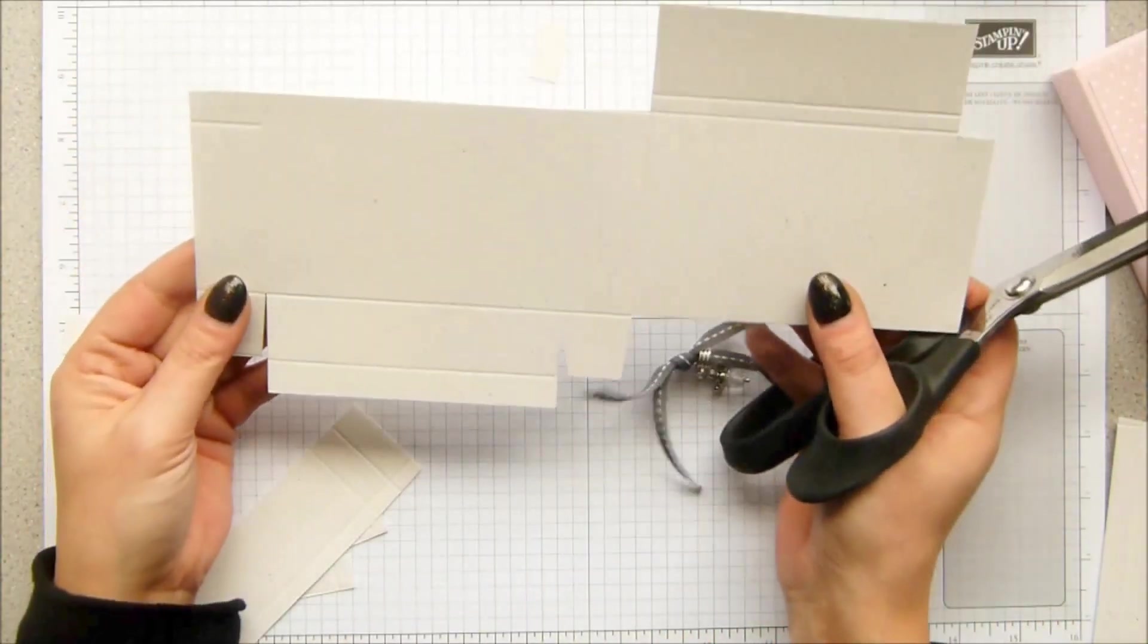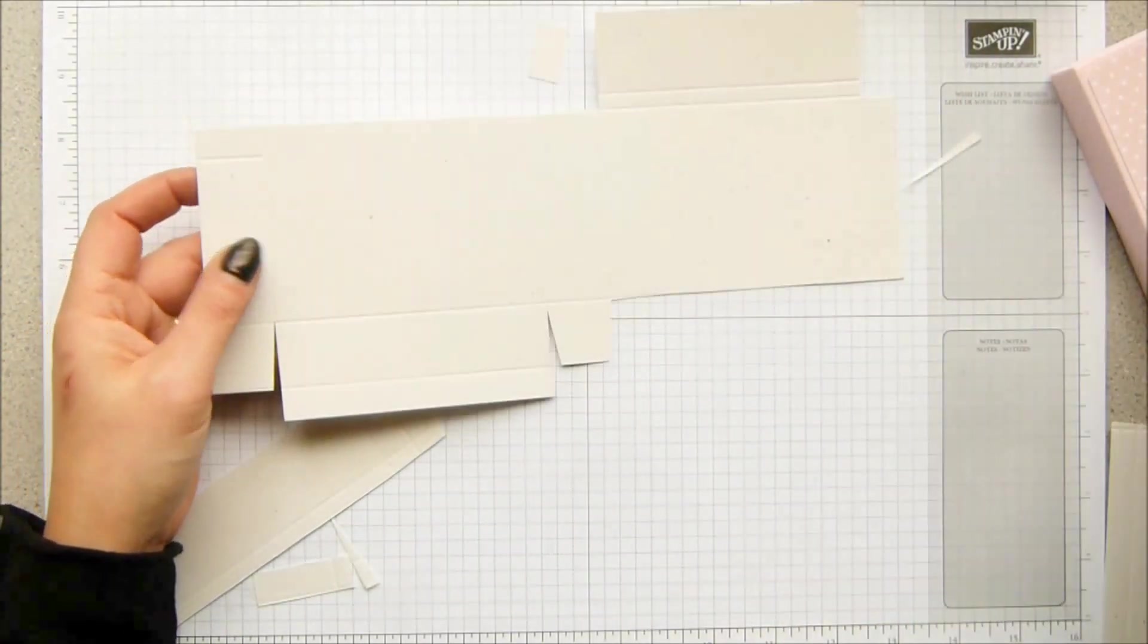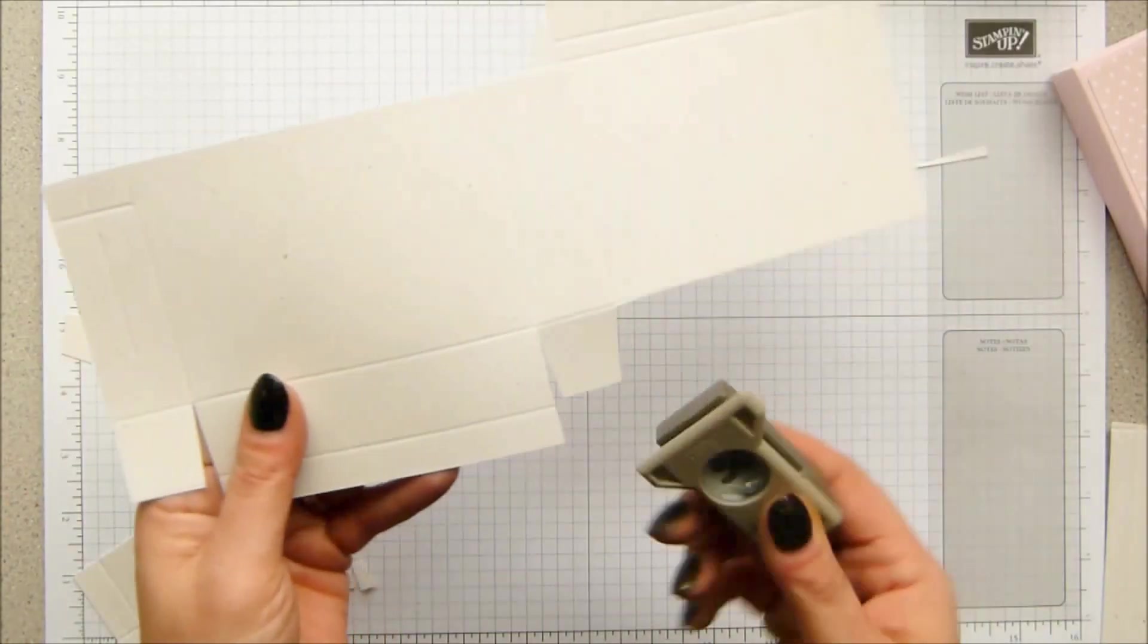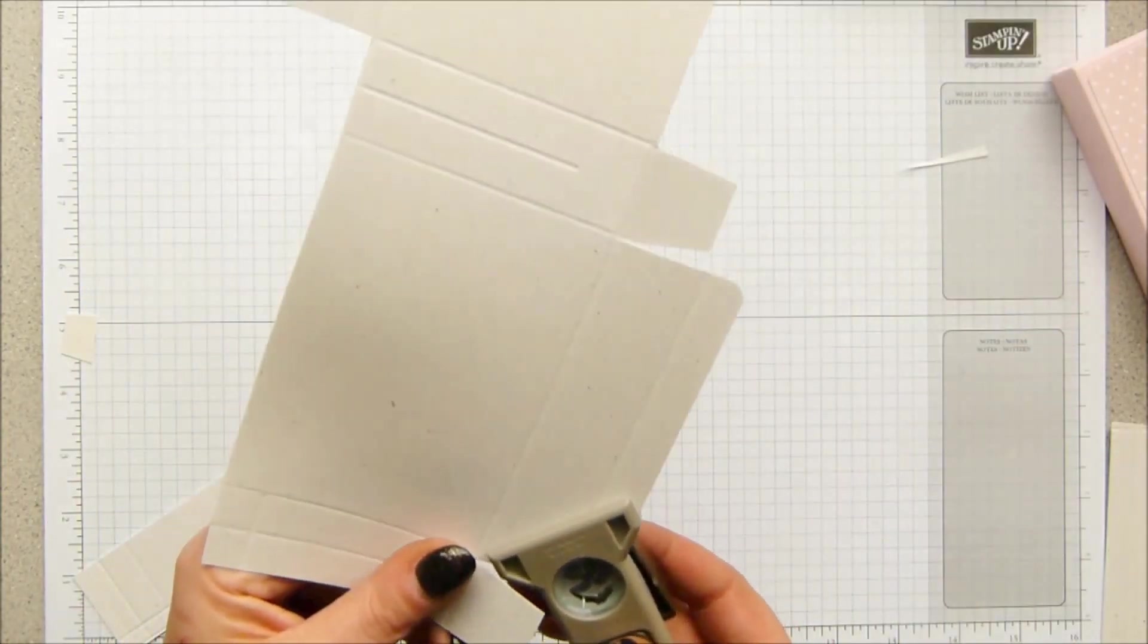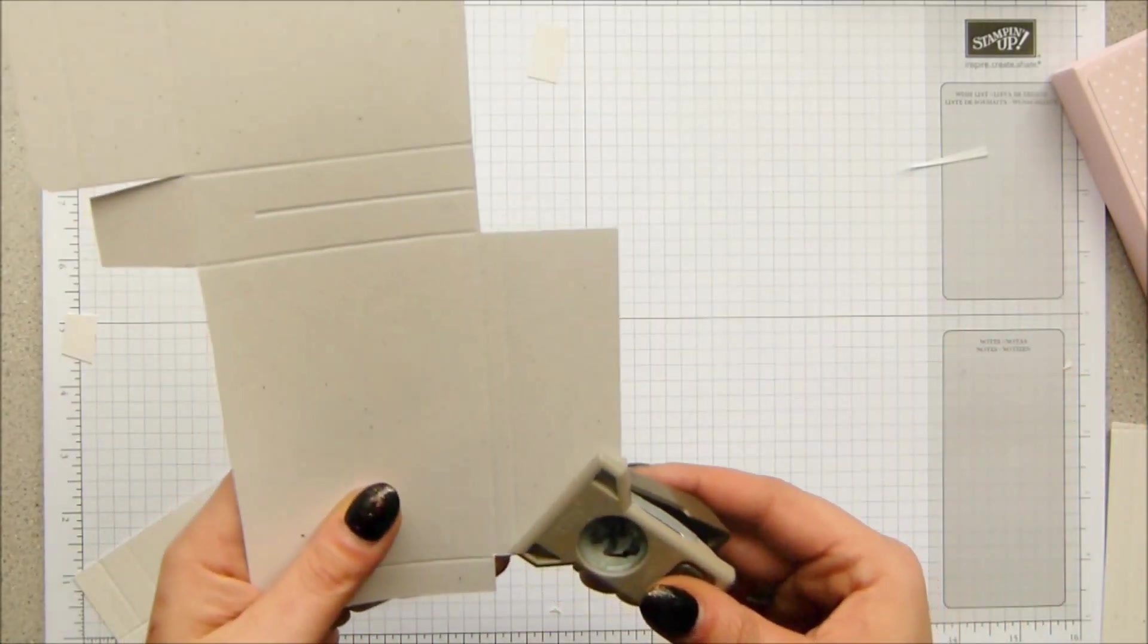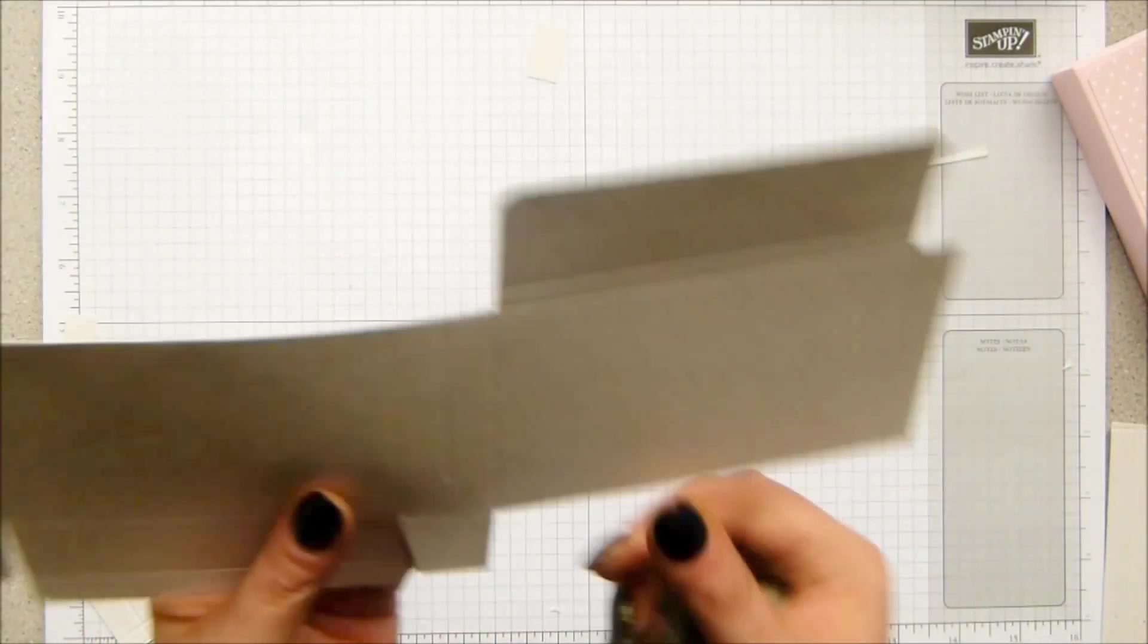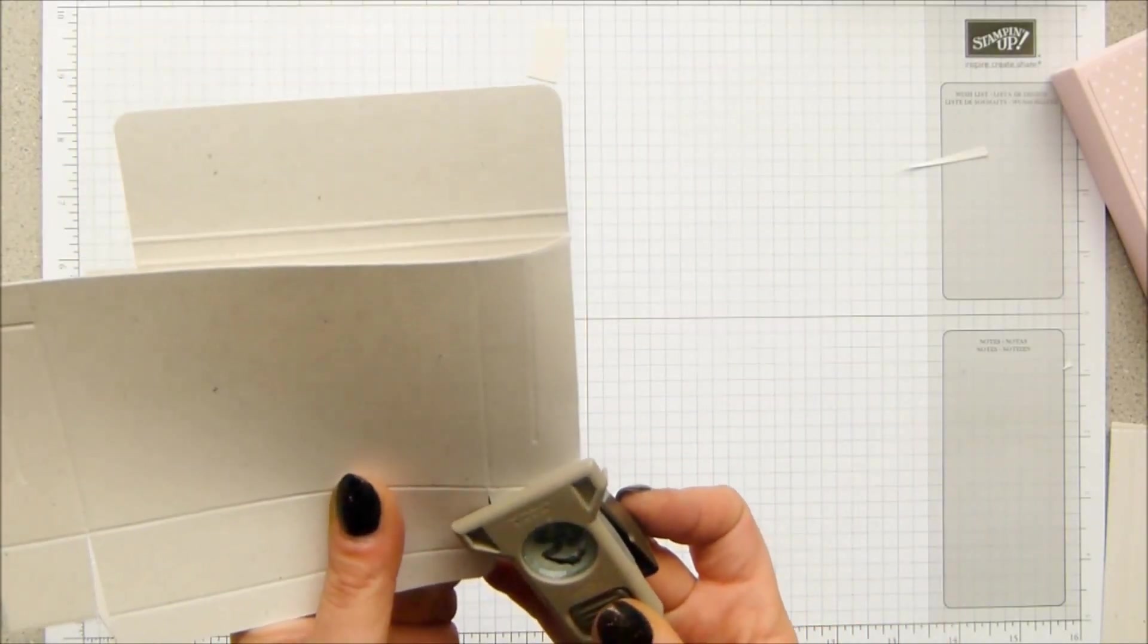You're left with that shape. You need your corner rounder because you want to make it close beautifully. So these ones down here at the bottom, round both of those, and then these ones at the top to make it attractive. And then these sections here which are going to be the side tabs that close in, round those off.